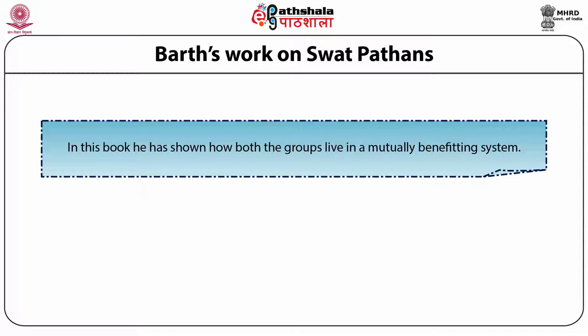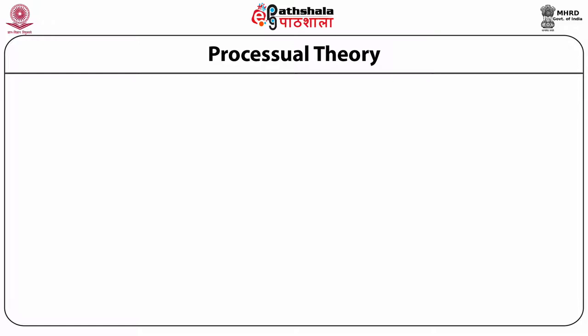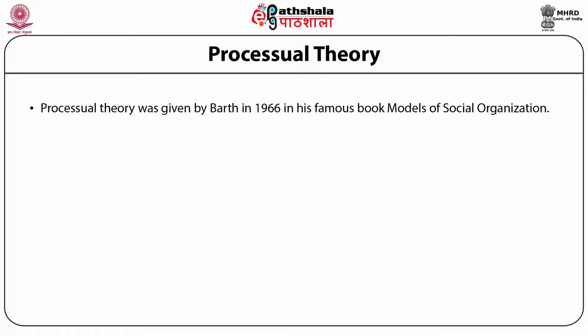Group A expects something from Group B, Group B from Group C, Group C from Group A again — all groups are expecting more from their transactions, which structural functionalism could not explain. According to Barth, the economic and political contacts are independent of each other. One has to understand the concept of processual theory: at a given point of time, how people have lived experience which is articulated. Processual theory was given by Frederick Barth in 1966, in his book Models of Social Organization.